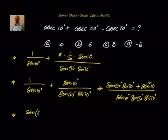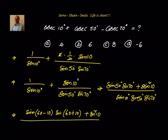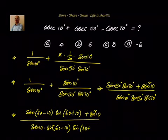Now sine 50 · sine 70 — can I write it as sine(60 minus 10) and sine(60 plus 10) plus sine squared 10? So I can write it as sine squared 10 divided by sine 10, and sine 50 · sine 70 in the denominator can be written as sine 10 · sine(60 minus 10) · sine(60 plus 10), which equals sine(a minus b) · sine(a plus b), so that is sine squared a minus sine squared b.